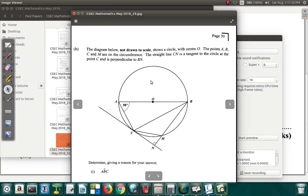Let's look at part B of question 9. It says the diagram below, not drawn to scale, shows a circle with center O. The points A, B, C, and M are on the circumference. The straight line CN is a tangent to the circle at point C and is perpendicular to BN.